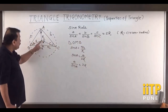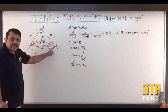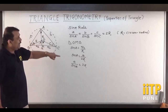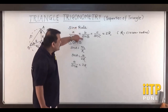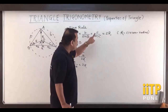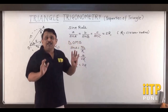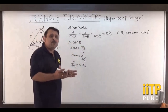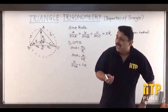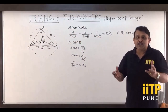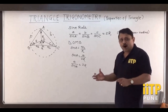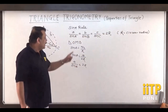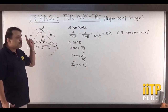Similarly, by dropping the perpendicular from O on side AC and from O on side AB, we can establish that b/sin B = 2R and c/sin C = 2R. Hence, the result a/sin A = b/sin B = c/sin C = 2R is proved. This is one of the simplest proofs of the Sine Rule.